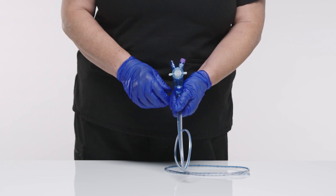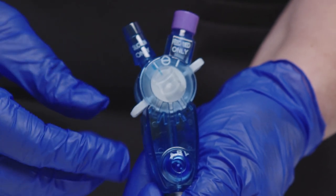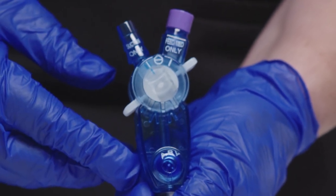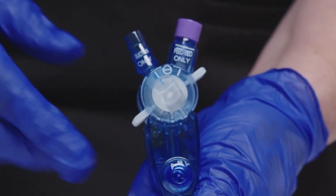Using a quarter twist, securely push the suction line over the port. Turn the selection knob until the indicator line on the knob is aligned with the indicator of the feed port and begin suctioning.